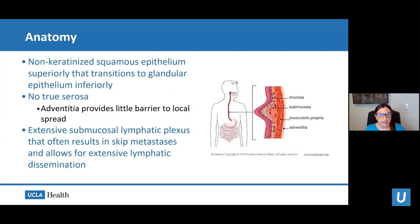Superiorly, the esophagus has non-keratinized squamous epithelium, which transitions to glandular epithelium more inferiorly. Unlike other GI organs, the esophagus does not have a true serosa, and the adventitia provides little barrier to local spread — one reason why patients present with locally advanced disease. There is also an extensive submucosal lymphatic plexus that results in skip metastases and allows for extensive lymphatic dissemination of disease.